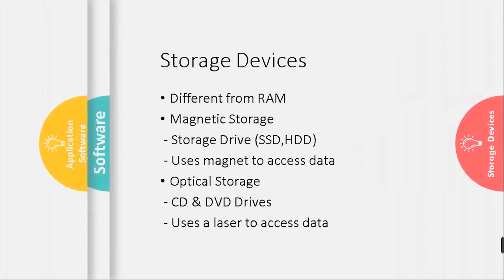Storage devices are different from RAM. Magnetic storage includes drives like SSD (solid state drive) and HDD (hard disk drive), which use magnets to access data. Optical storage includes CD and DVD drives, which use a laser to access data.